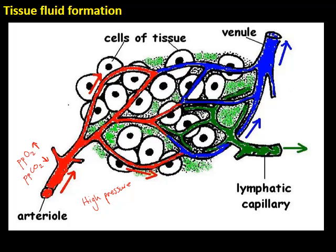When the arteriole splits into the capillary network, the fluid component of the blood — the blood plasma — can seep across the wall of the capillaries and that forms tissue fluid, which contains useful molecules like glucose, oxygen, and mineral ions. Most of the plasma proteins will remain in the plasma of the blood as they cannot get across the capillary wall, and all the cells found in the blood — erythrocytes, leukocytes, and thrombocytes — will also remain within the capillary.